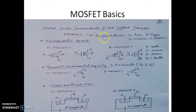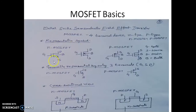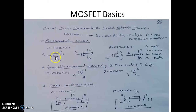MOSFET has four terminals. It can be an N-MOSFET or P-MOSFET, represented by their respective symbols. The four terminals are drain, bulk, source, and gate. It will be represented by either of these symbols. Similarly, for P-MOSFET it is represented by its own symbol.